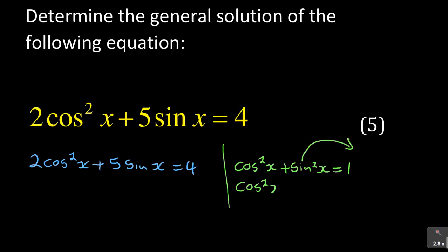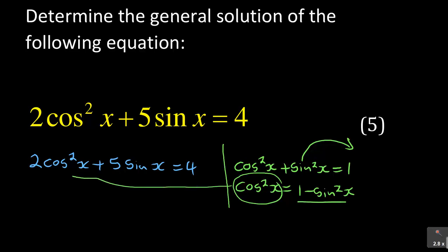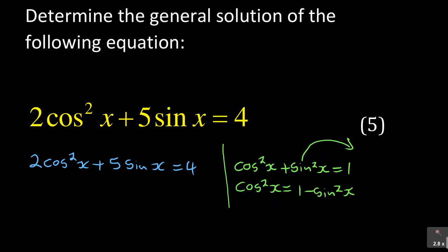So cos squared x is equal to one minus sine squared x. I am doing this so that the cos squared will be replaced by sine. Wherever there is cos squared, I am going to substitute sine. The main aim is to make sure that everything now becomes sine only.